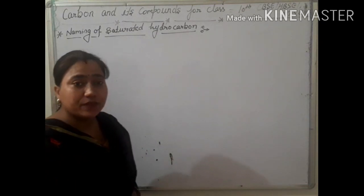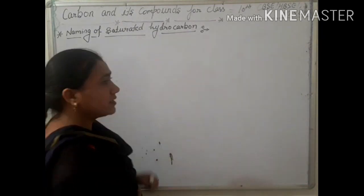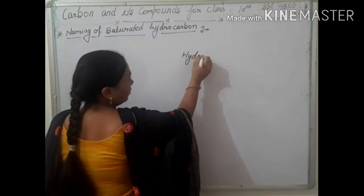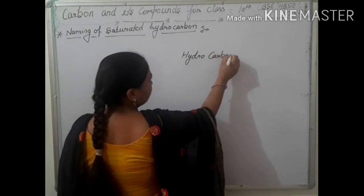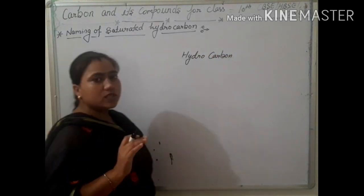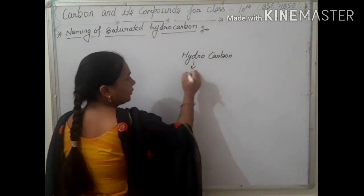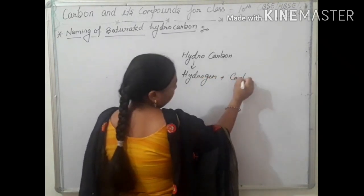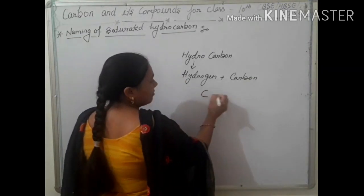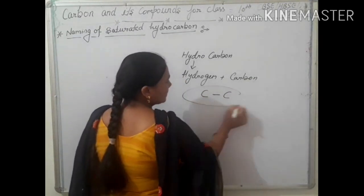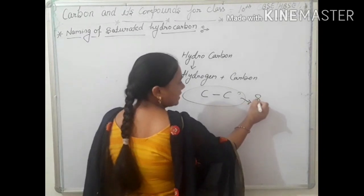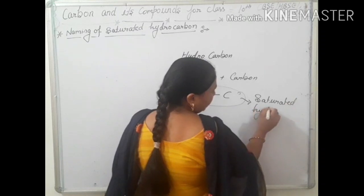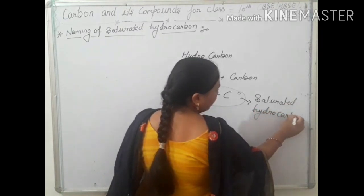In the last video, we discussed hydrocarbons and saturated hydrocarbons. Hydrocarbon compounds are those compounds which are made up of hydrogen and carbon. And in which carbon atoms have single bonds — these compounds are known as saturated hydrocarbon compounds.